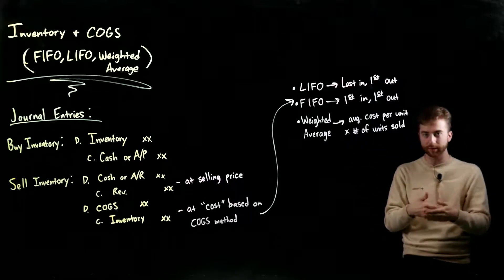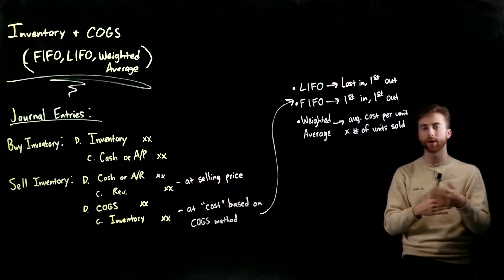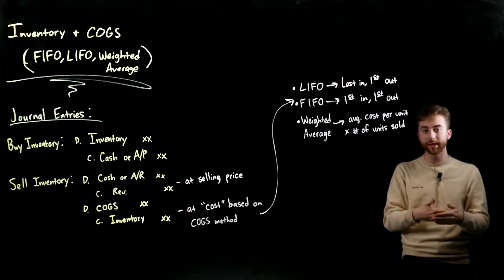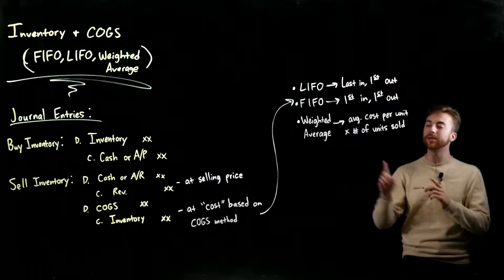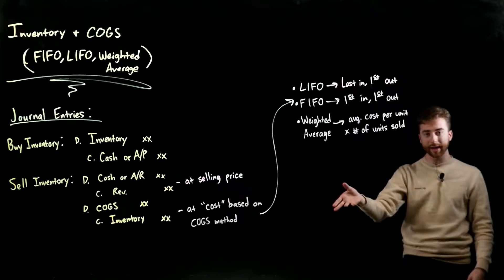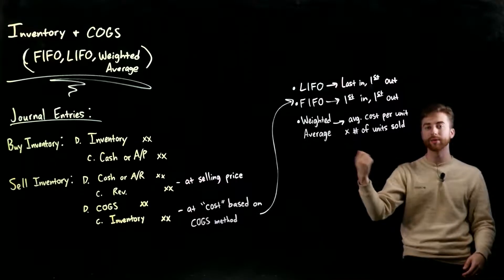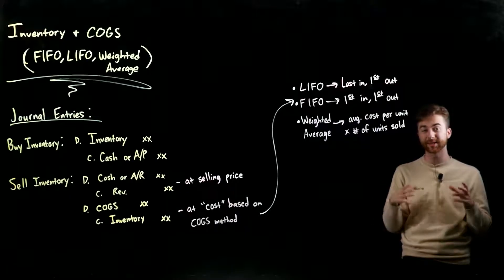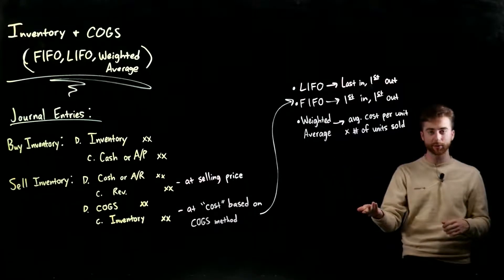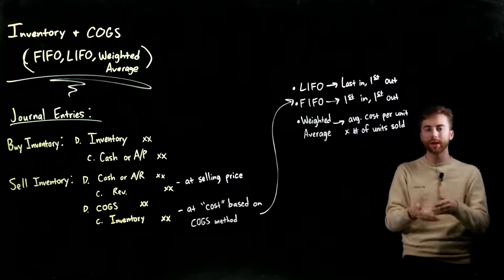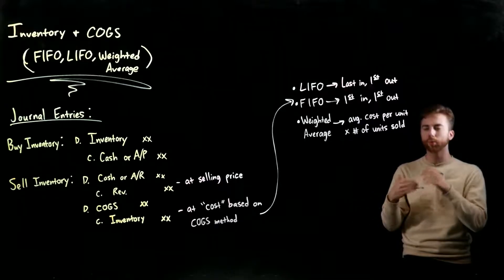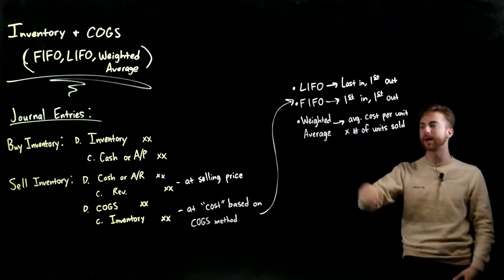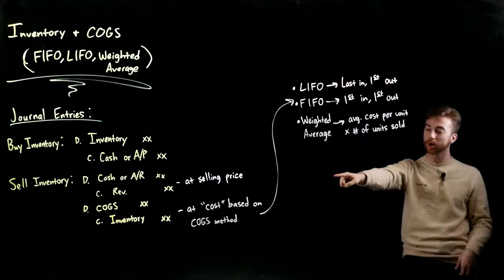When we sell inventory, there are really two journal entries. The first recognizes the sale: you debit cash or accounts receivable and credit revenue at the selling price. The second recognizes the expense: now that we've sold it and received the benefit of having purchased the inventory, we debit cost of goods sold and credit inventory — and we do those based on the cost we incurred when we purchased it, not the selling price.